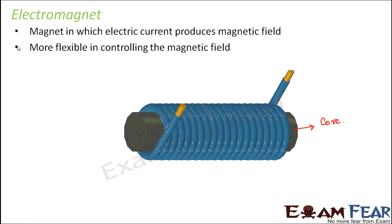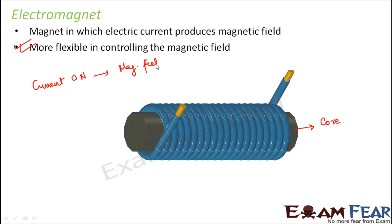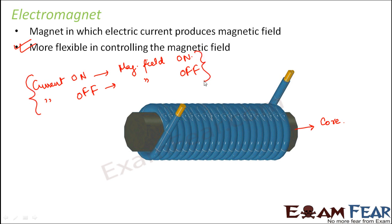The advantage of an electromagnet is that it is more flexible in controlling the magnetic field. When electric current is on, magnetic field is produced. When electric current is off, no magnetic field is produced. You simply switch the current on or off, and the magnetic field is controlled accordingly. It is pretty easy to control the amount of magnetic field produced by this magnet.